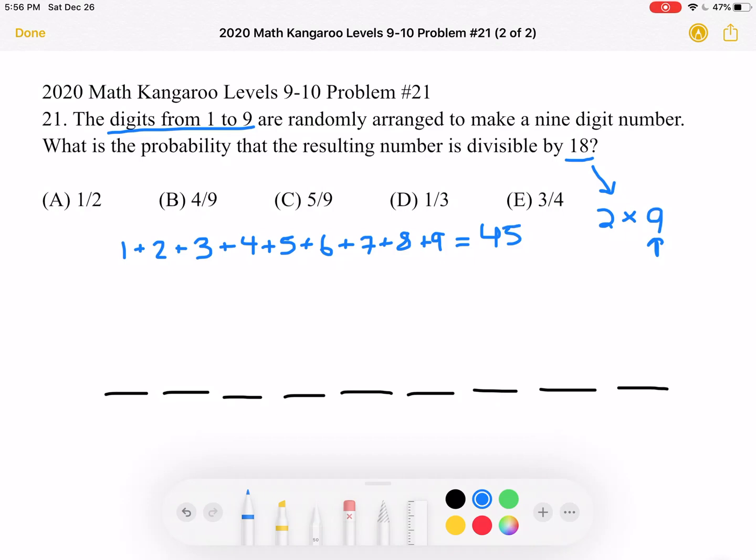Well, this is good. 45 is a multiple of 9. So our resulting number, no matter in what order these digits are placed, will definitely be a multiple of 9. So that's true 100% of the time if we use the nine digits 1 through 9 to make a nine-digit number.